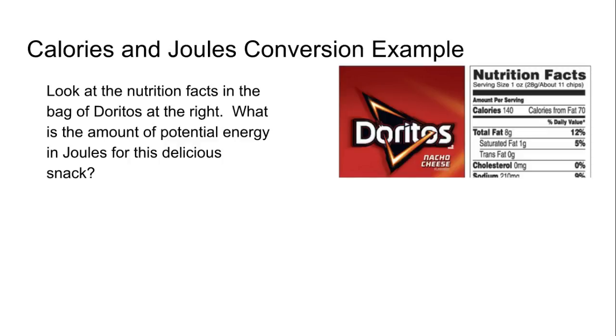So let's look at an example here. We have a delicious bag of Doritos over here. If you look at the nutrition facts, you'll see that it contains 140 calories. You'll also see that calories is capitalized. So that's 140 nutritionist calories. So let's go through a calculation to see what is the amount of potential energy in this serving size of Doritos in joules. So what we got to start with first is that we know there's 140 nutritionist calories in this serving. Well, we need to get that into scientific calories first. So we multiply by 1,000 there, and you'll notice the nutritionist calories cancel out.